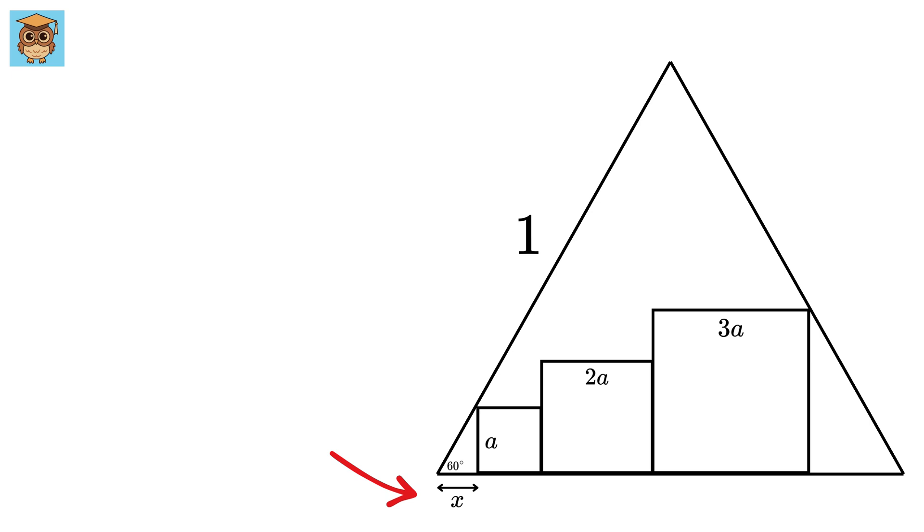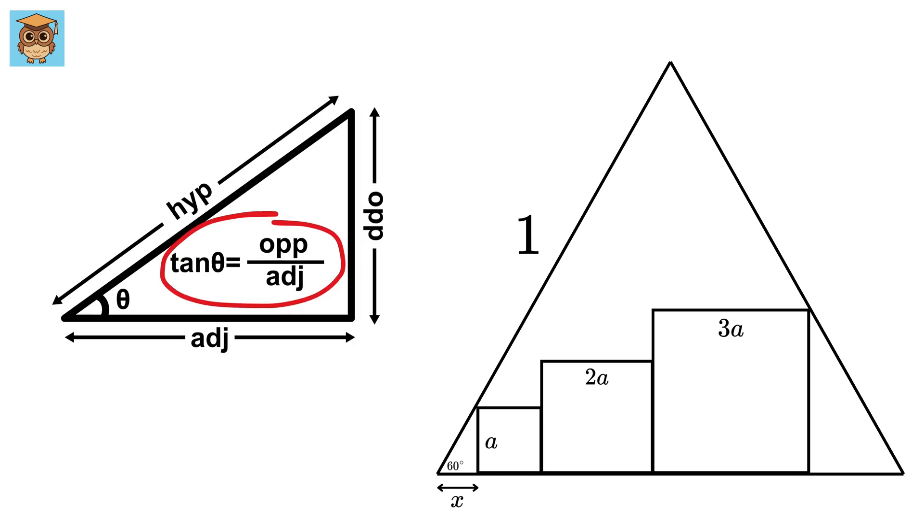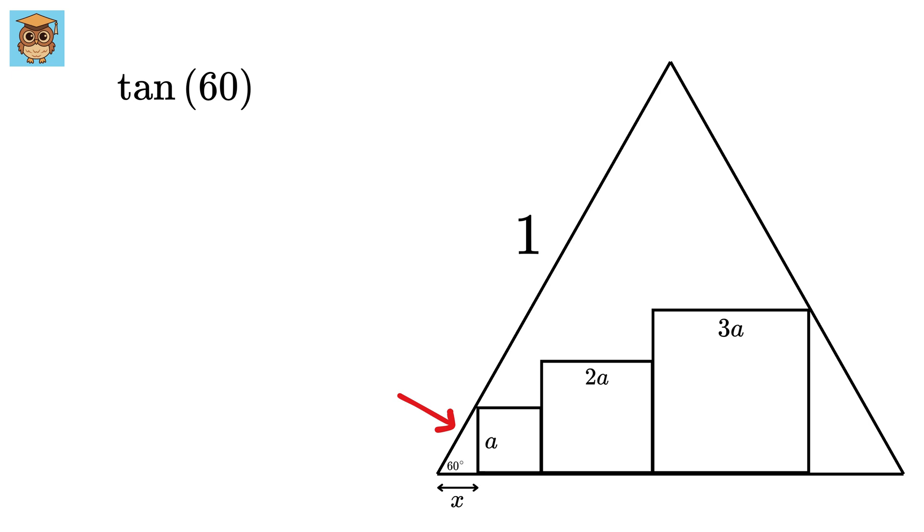Now let us label this as x. We can use trigonometry here to find x in terms of a. Here, tan of 60 will be this a upon x.